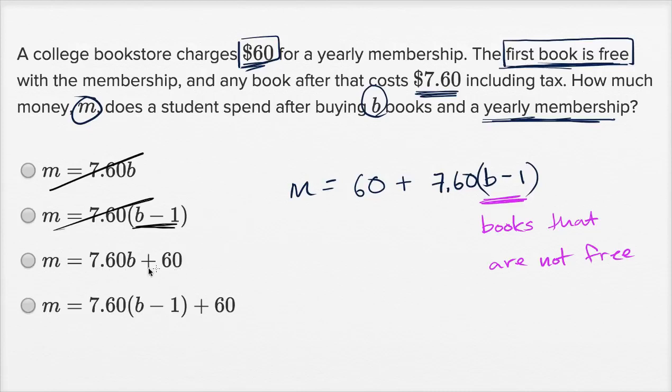This one accounts for the membership, but it doesn't account for the free book. And then we have this one here, which is exactly what we wrote, except they just swapped. If you just swap these two terms, if you do $7.60 times B minus one plus 60. So we're gonna go with that one right there.